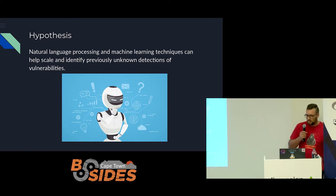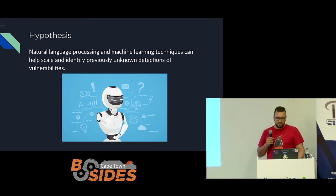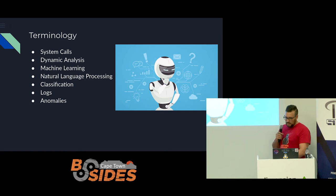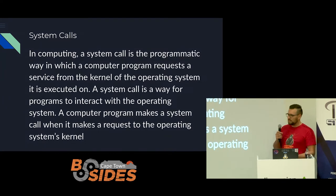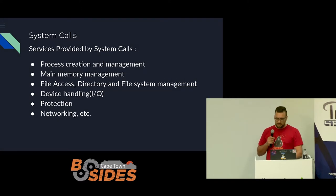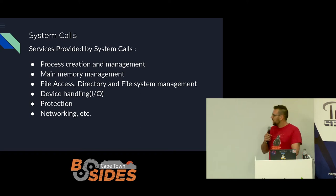The hypothesis is that natural language processing and machine learning techniques could help scale and identify previously unknown vulnerabilities and make your life easier. I thought I'd brush up on some terms: system calls — you're talking to the kernel, executing things on the system, trying to access a resource. You've got process creation, main memory allocation, devices, network, file access, and even protecting the kernel itself.